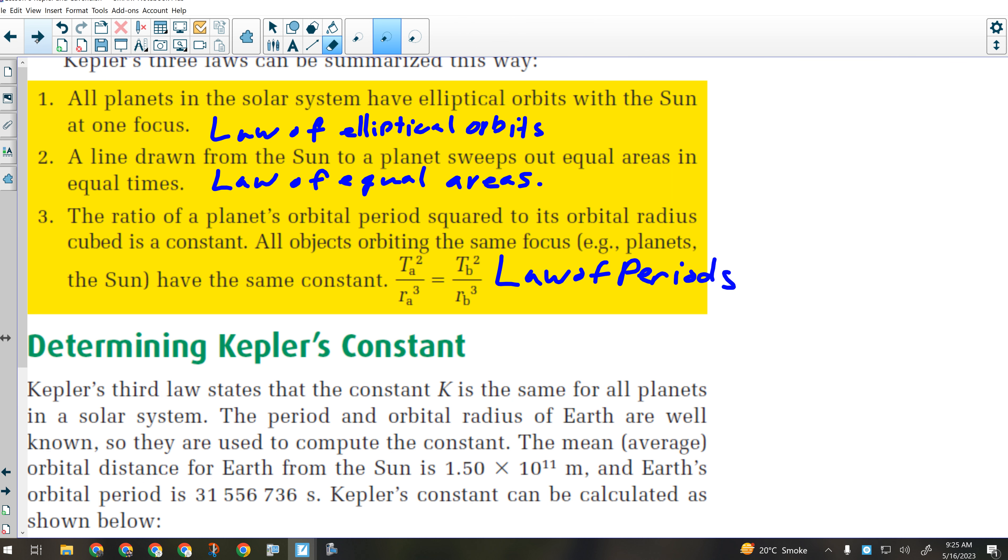So, what we need to get out of all of this are these things in yellow. You need to add them to your notes. They're not in there. This is a perfect multiple choice question type of thing. Kepler's three laws. So, I can very easily make a multiple choice question that says, which of the following would Kepler not agree with? First one, the law of elliptical orbits. Planets in the solar system have elliptical orbits with the sun at one focus. Number two, a line drawn from the sun to a planet sweeps out equal areas in equal times. Law of equal areas. And the ratio of a planet's orbital period squared to its orbital radius cubed is constant. All objects orbiting the same central focus will have the same constant. That's the law of periods.